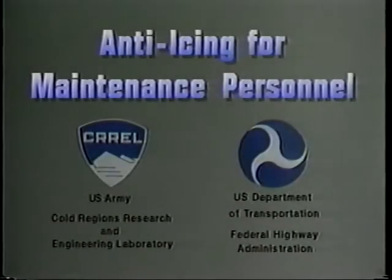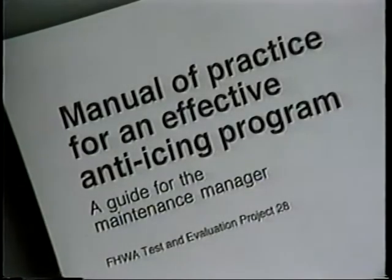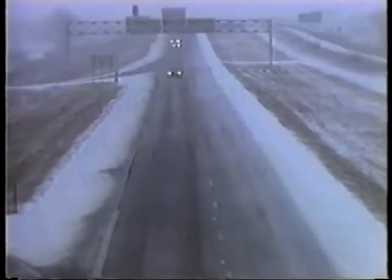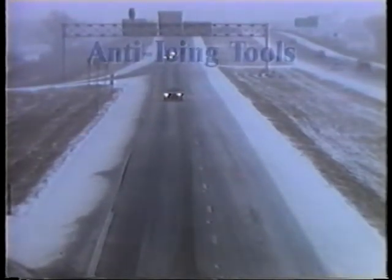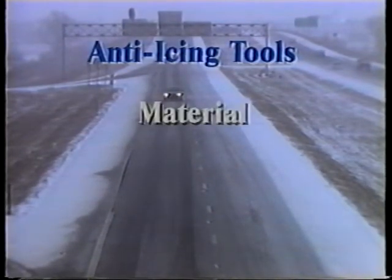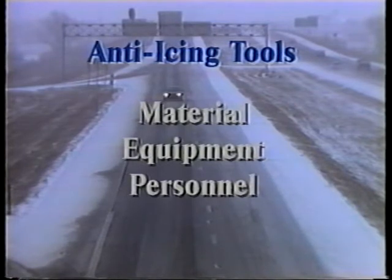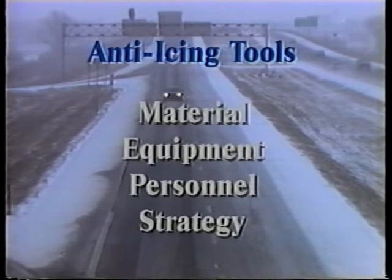The information presented here is intended to help maintenance managers and field personnel implement effective anti-icing programs. Further details can be found in the Federal Highway Administration publication, Manual of Practice for an Effective Anti-Icing Program. Anti-icing is a systematic approach to winter road maintenance that requires the use of the right tools, material, equipment, personnel, and strategy at the right place and at the right time to prevent or reduce the ice pavement bond.